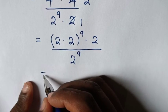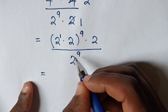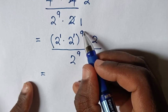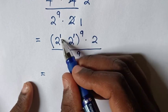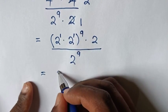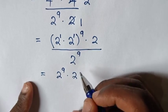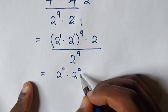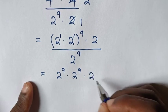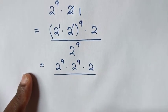Here 2 is the same as 2 power 1, and this 2 is the same as 2 power 1. So multiply the power of 9 inside the bracket: 2 power 9 times 2 power 9 times 2 power 9 times 2 power 9 times 2 power 9 times 2, over 2 power 9.